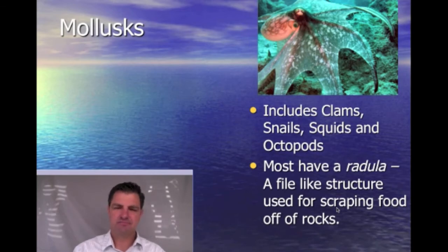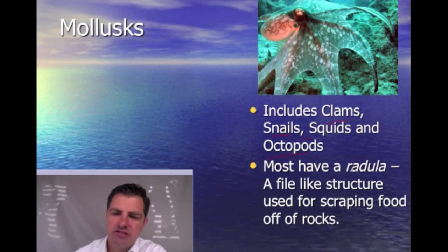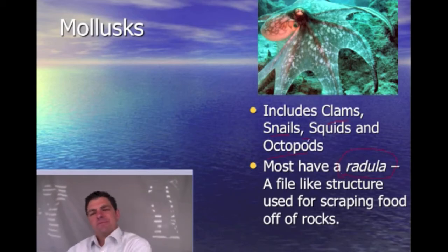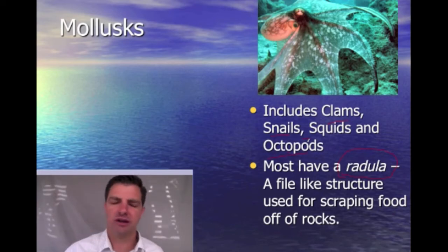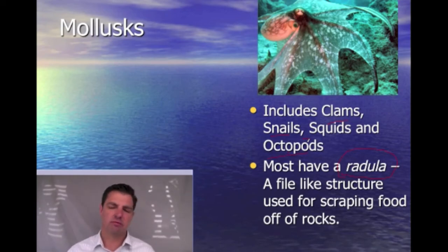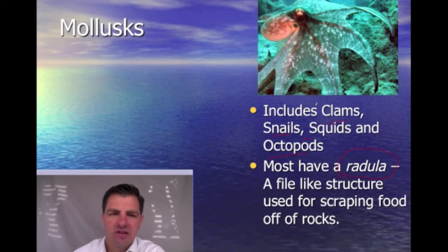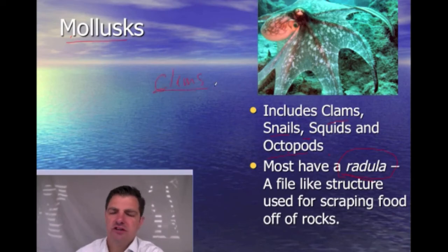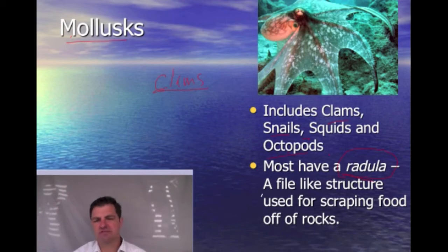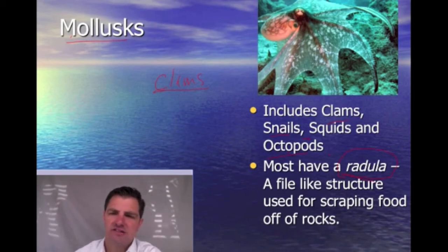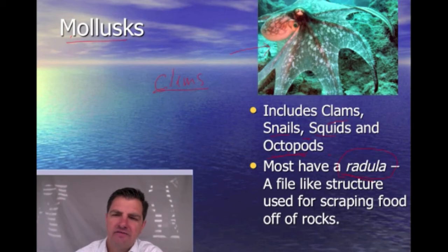The next group are the Mollusca — the molluscs — which include things like clams, snails, squid, and octopods. Most of these have a specialized structure called a radula. Most species of plants and animals are distinguished by one or two particular traits that they gained as they evolved. Almost all species of Mollusca have this radula — one group that doesn't are clams, which are typically filter feeders. The radula is a file-like structure used for scraping food off rocks, as in the case of a snail. In the case of squids and octopus, they have the radula inside a beak-like structure that they can use for biting things.